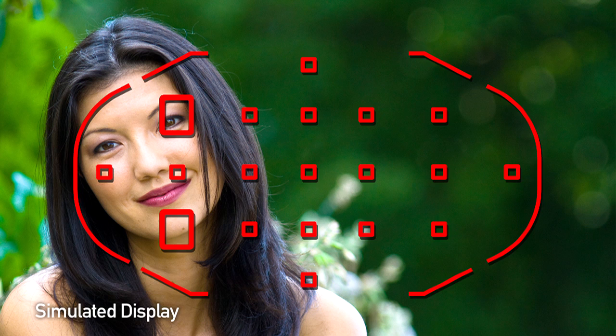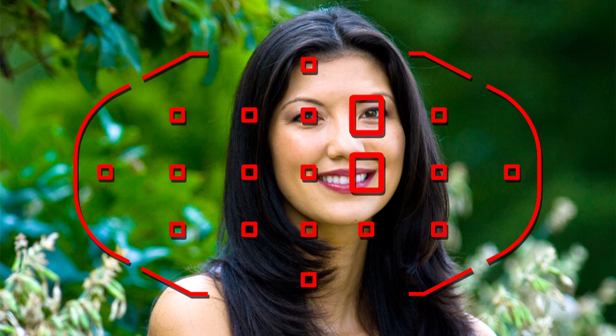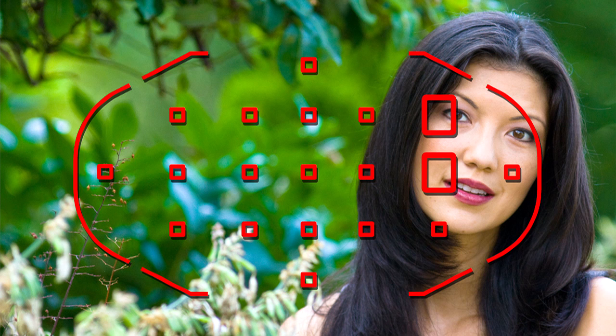In One-Shot AF mode, the camera will pick the point or points to focus on the nearest part of your subject that has good detail. Those points will appear in the viewfinder, so you can see exactly what the camera is doing. It's very easy to quickly compose and shoot off-center subjects without having to waste time locking focus and recomposing.